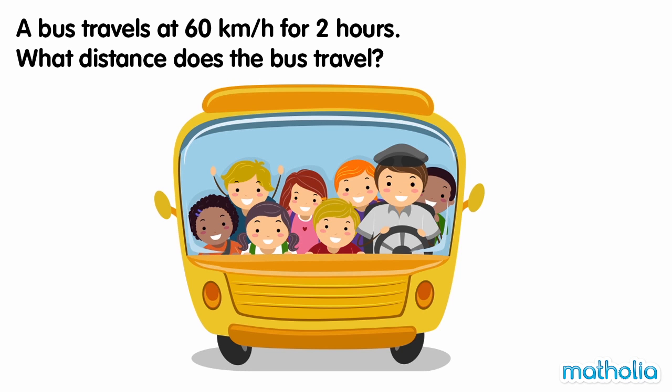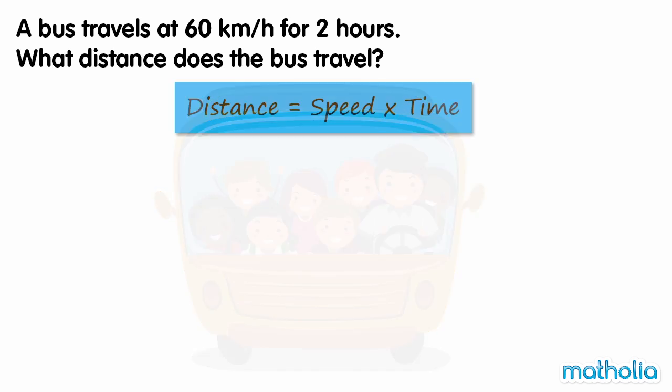A bus travels at 60 km per hour for 2 hours. What distance does the bus travel? Recall that distance is equal to speed multiplied by time. The speed is 60 km per hour and the time is 2 hours.